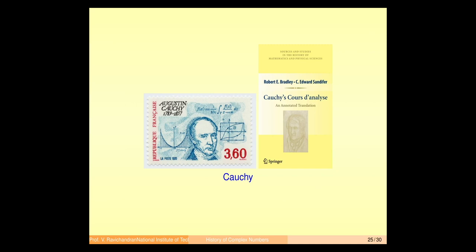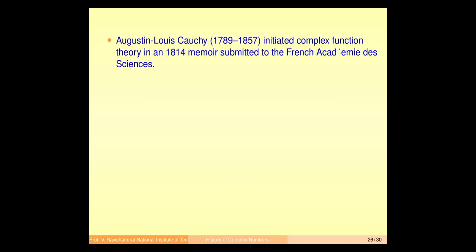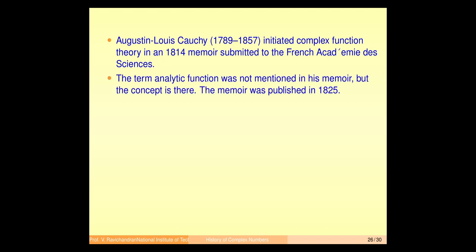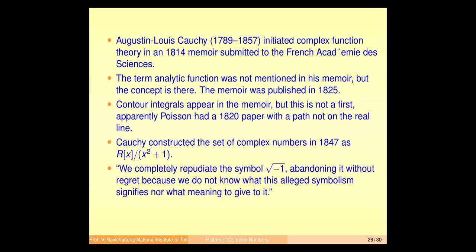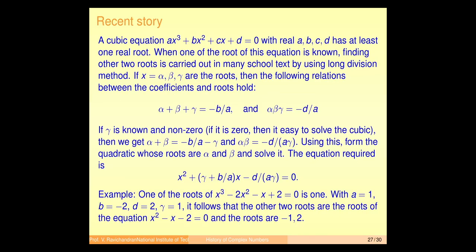Cauchy developed complex function theory in full detail. A French postage stamp in his honor depicts the Cauchy integral formula. His book, known as Cours d'Analyse, has been translated into English and published by Springer. Cauchy also constructed the set of complex numbers in 1847 as the polynomial ring ℝ[x]/(x² + 1). Cauchy initiated complex function theory as we know it, though Weierstrass independently found Cauchy's theorem as well.